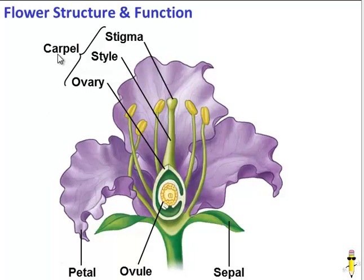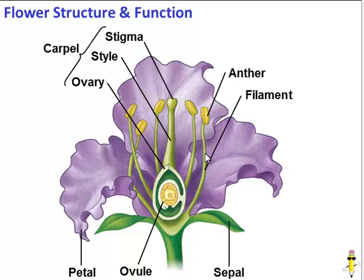Many flowers have both male and female parts. Let's look at the male part. The male part consists of the anther — this is where pollen is produced, and pollen contains sperm. The anther is supported by the filament. These two structures together make up the stamen, the male part of the plant. And that's easy to remember because you can see the word 'men' in stamen.